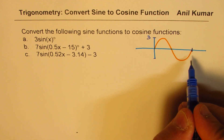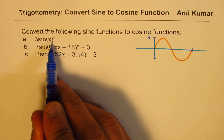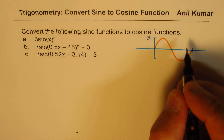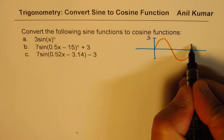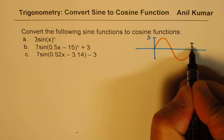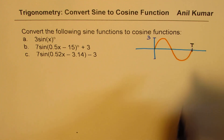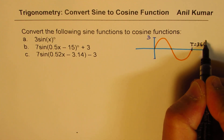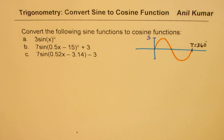And this time period — we know it is 360 degrees, but for the time being, to understand the concepts, I will write this as T. Time period is T, which is equal to 360 degrees for this particular case, but we'll work with T.